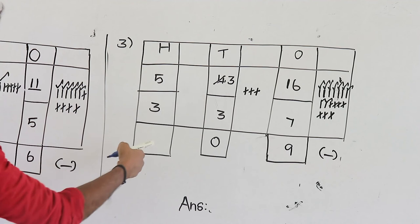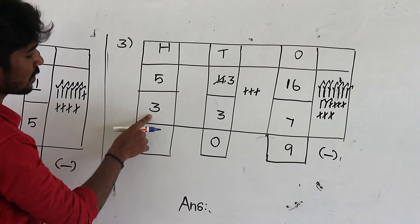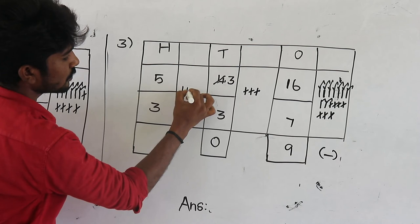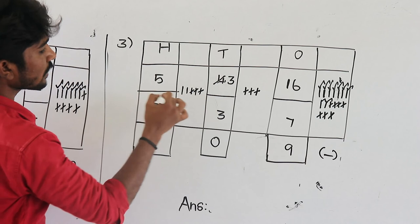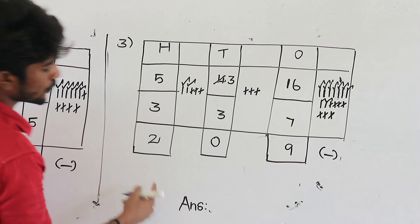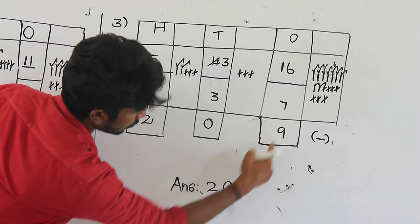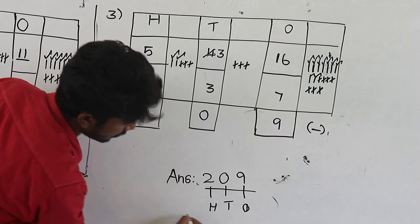Next, hundreds value. First number is 5, second number is 3. Upper part is 5 — greatest number; lower part is 3 — smallest number. Subtraction is possible. Draw 5 lines, cancel 3 lines, count remaining: 1, 2. So 5 minus 3 is equal to 2. Write the answer: first digit 2, second digit 0, third digit 9. Here 9 is ones value, 0 is tens value, 2 is hundreds value. So the answer is 209.